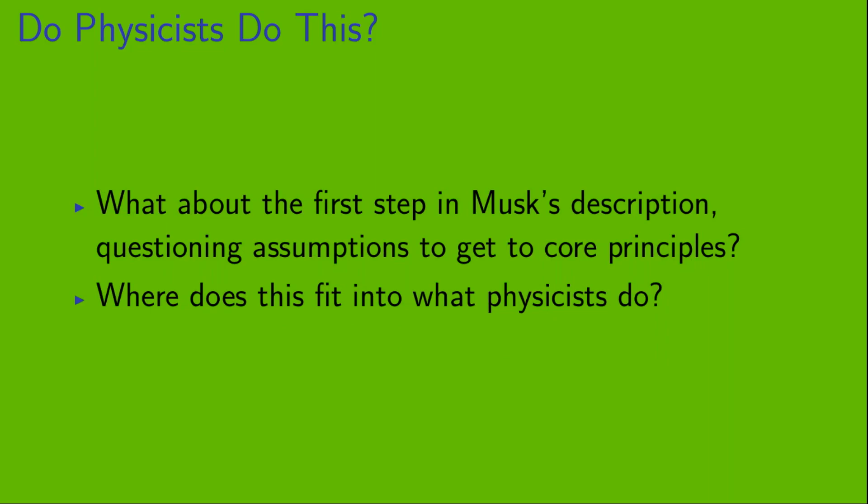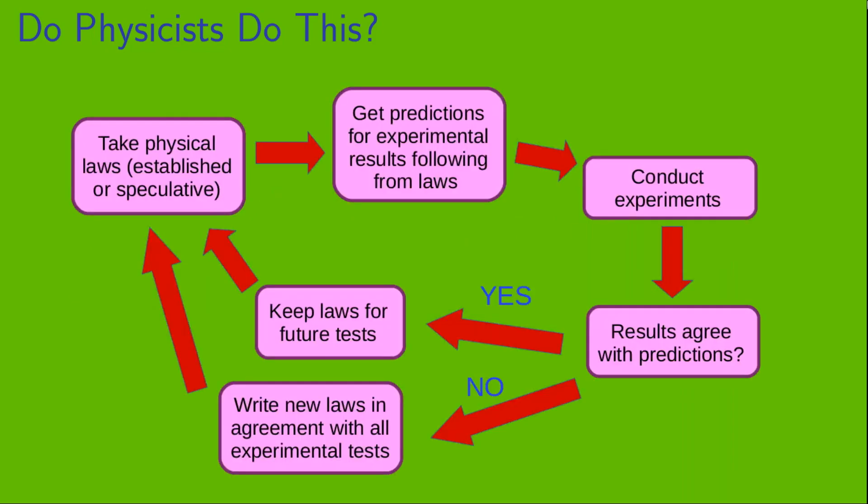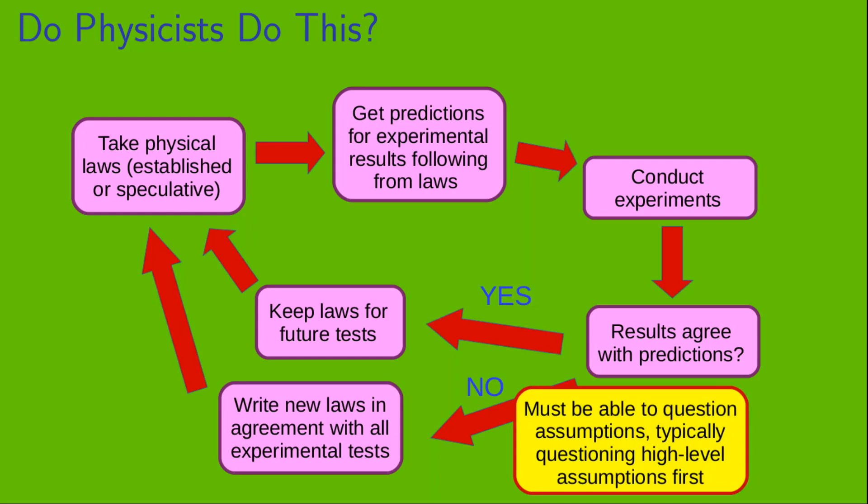Now, what about the first step in Musk's description? Questioning assumptions to get to core principles. Where does this fit into the picture we just saw? Now let's look at the step in this process where we've gotten the results of our experiments, and we ask, do those results agree with the predictions that come from our physical laws? If the answer to that question is yes, our job is pretty easy. But, if the answer to this question is no, then we have to be able to question our assumptions. And, when we question those assumptions, we typically question the high-level assumptions first.